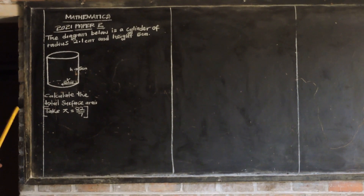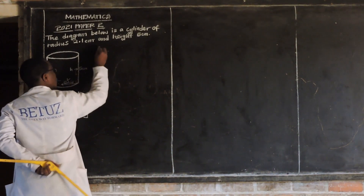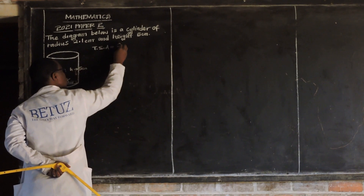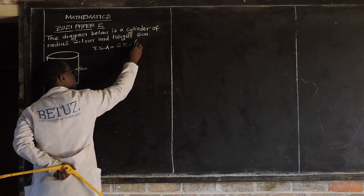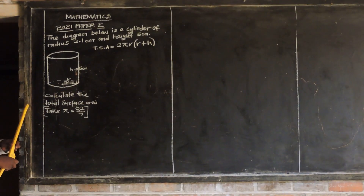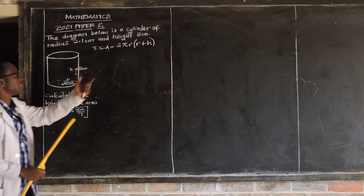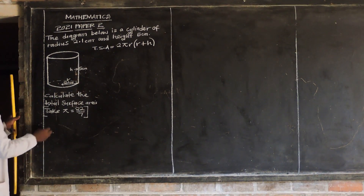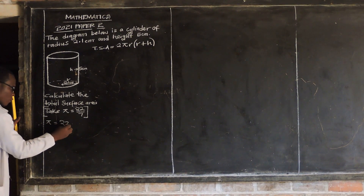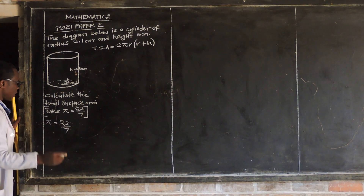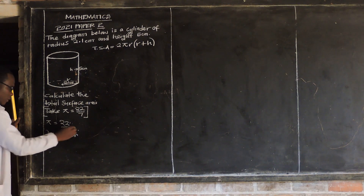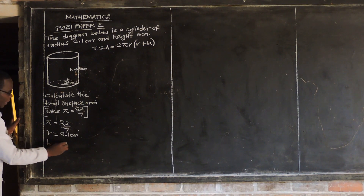I'm going to write the formula we use for finding the total surface area, which is given by: total surface area is equal to 2πr, open brackets, r plus h, which is our height. We need to substitute what we have been given into this formula. We have been given pi as 22 over 7, our radius is 2.1 centimeters, and our height is 5 centimeters.